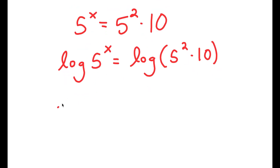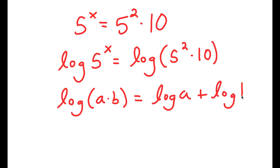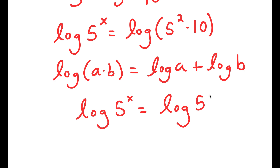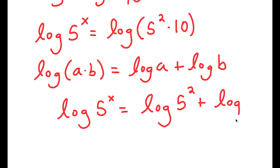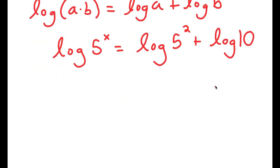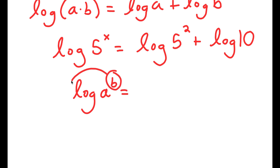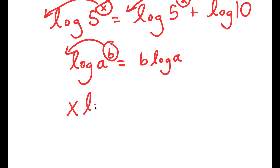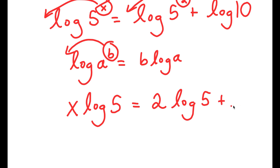This is the same thing as: log of a times b is equal to log of a plus log of b. So log of 5 squared times 10 equals log of 5 squared plus log of 10. Now, if I have something in the form log a to the power of b, I can move the exponent b to the front — so this equals b times log a. So log 5 to the power of x becomes x times log 5, and log 5 squared becomes 2 times log 5. I get x times log of 5 is equal to 2 times log of 5 plus log 10.